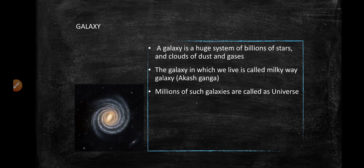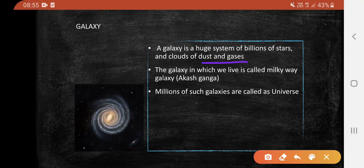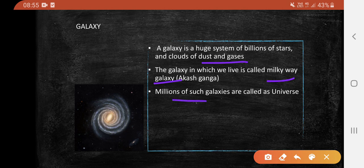Galaxy: A galaxy is a huge system of billions of stars and clouds of dust and gases. The galaxy in which we live is called the Milky Way Galaxy. Millions of such galaxies are together known as the universe.